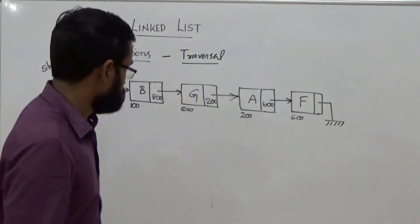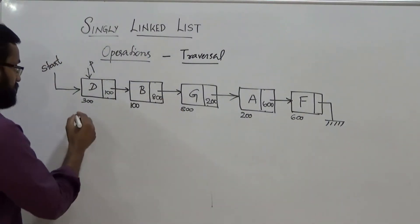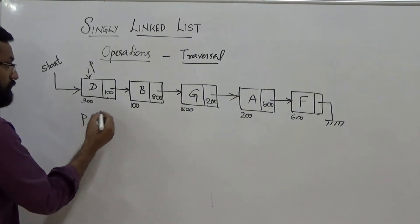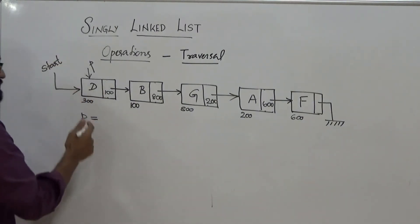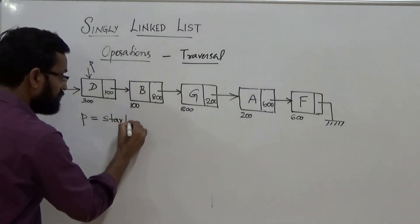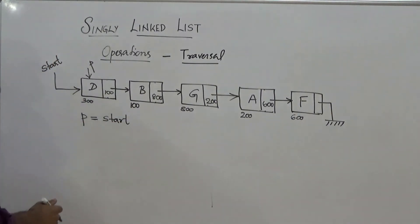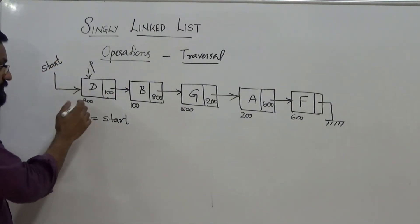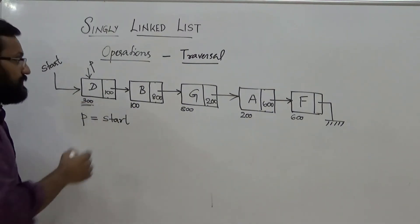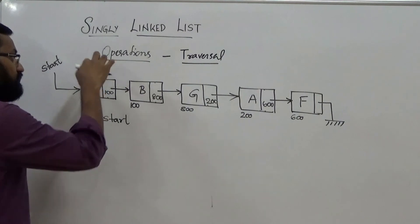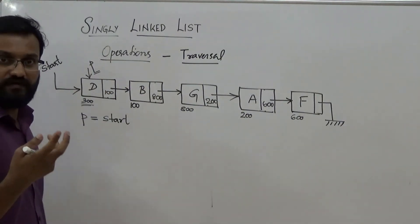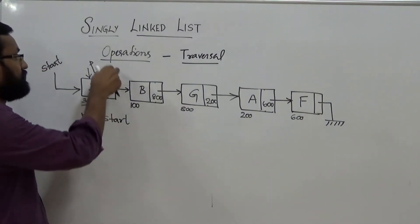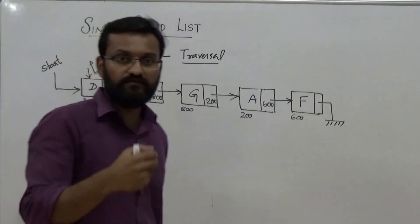To point P to the first node, or starting node referred by pointer start, you perform the assignment P = start. As far as start is concerned, it is a pointer variable that holds address 300. P is also a pointer of type node that can hold the address of a node of the same type. Through this assignment you are transferring 300 to pointer P, so P becomes a pointer to the first node in the linked list.